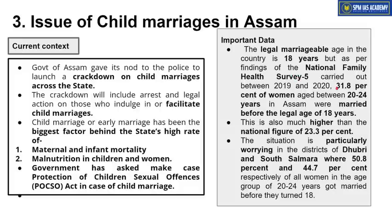As per National Family Health Survey No. 5 (NFHS-5), which recently released its data, 31.8% women in Assam were married before 18 years of age. The survey was conducted among women between 20 to 24 years of age, and it was found that 31.8% of them were married even before they attained the age of 18. Assam ke andar jo child marriage ka rate hai, especially amongst women and girls, that is much higher than the national figure. India's national average is 23.3%, while Assam's average is much higher at around 31.8%.